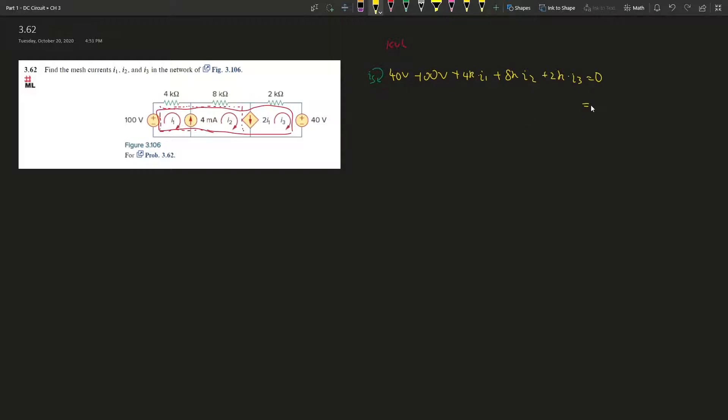And this whole thing gives you zero. Simplify, so negative 60 goes to positive 60, and then 4k i1 plus 8k i2 plus 2k i3 is going to give us 60. Or you can simplify this, divide by 2 on both sides. It's going to be 2k i1 plus 4k i2 plus 1k i3, this whole thing gives you 30 volts.